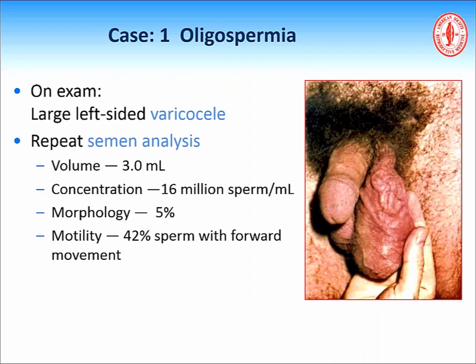On his focused physical exam, you identify a large left-sided varicocele, and when the semen analysis is repeated, the concentration is now 16 million sperm per cc and the motility is about 42 percent — more than the 15 million and 40 percent established by the WHO. The volume and morphology remain normal and are comparable to the previous semen analysis the patient brought in.